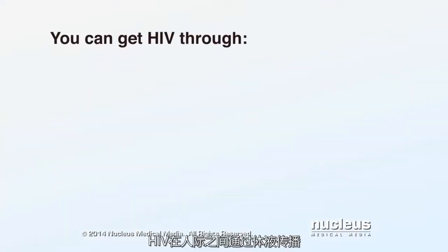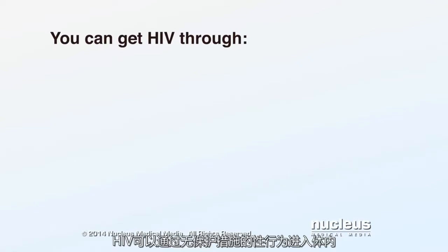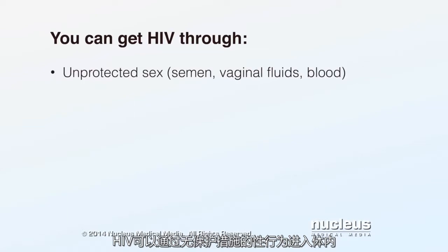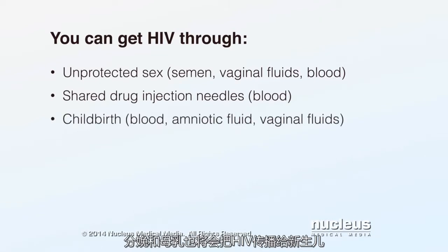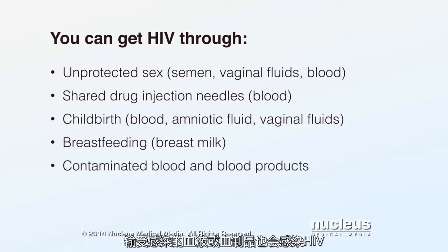HIV passes from person to person through infected body fluids. HIV can enter your body during unprotected sex, while sharing drug injection needles, during childbirth, while breastfeeding from your mother, or from contaminated blood or blood products.